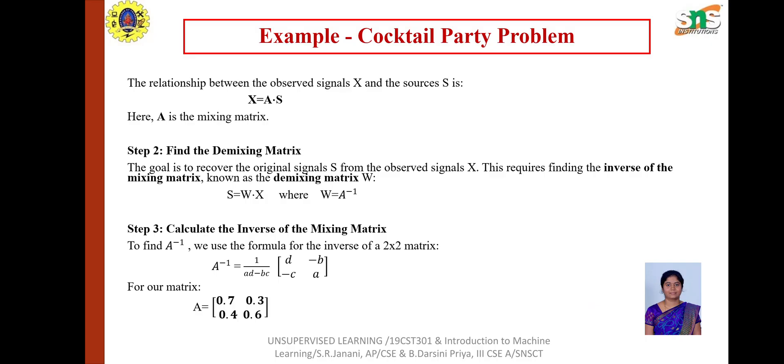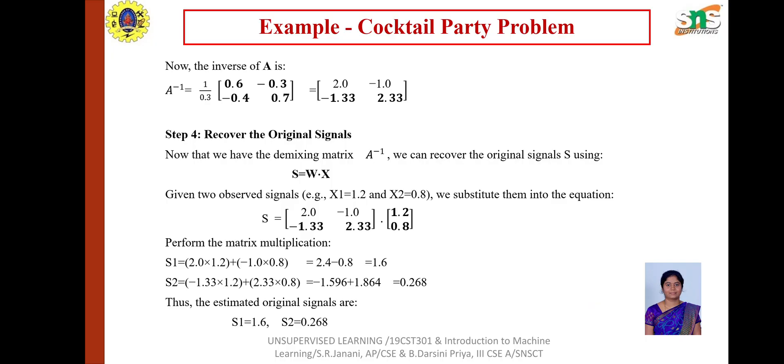This requires finding the inverse of the mixing matrix, which is known as demixing matrix. S = W·X where W = A inverse. The next step is to calculate the inverse of the mixing matrix. For a 2×2 matrix, A inverse = 1/(ad-bc) times [d, -b; -c, a], and the inverse matrix is formed.